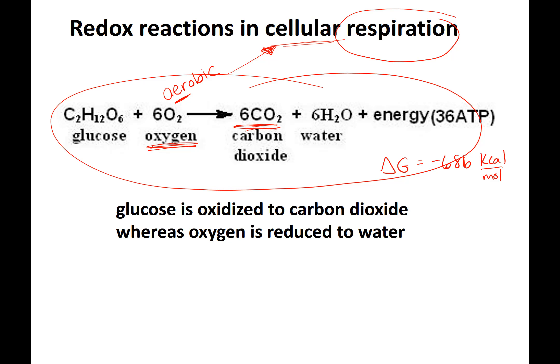Don't get hung up on the number 36 ATP. You're going to see numbers between 30 to 38 ATP depending on the textbook or source. It may even be closer to 28. The point is we're making lots of ATP through aerobic cellular respiration.